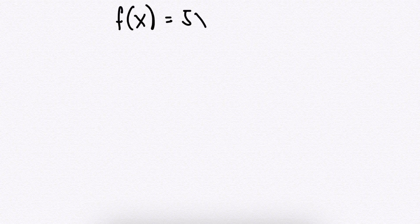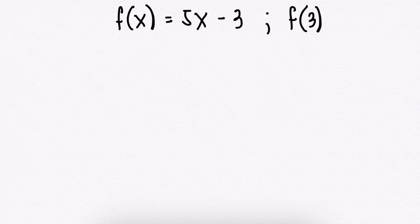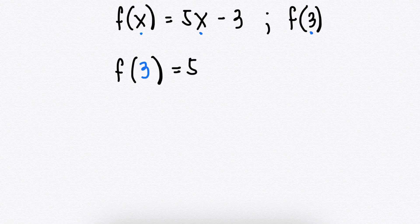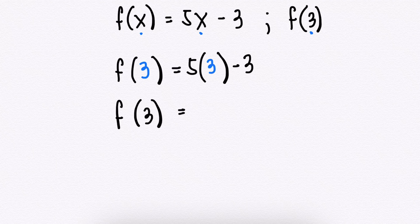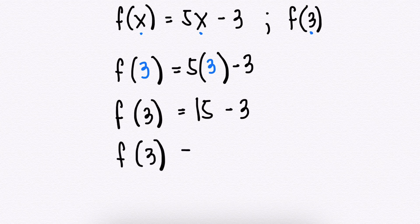Say for example, given a function f(x) = 5x − 3, evaluate f(3). To solve for this, you simply replace every x in the function with 3. So you have f(3) = 5 × 3 − 3. f(3) = 15 − 3.